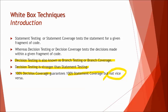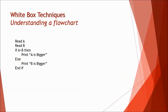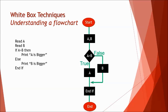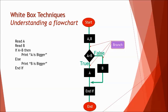We have covered the understanding of flowcharts in statement testing already — how a fragment of code given in a question should be converted to a flowchart, and from the flowchart you can derive the number of test cases and get the right answer. A flowchart basically consists of branches, which are called decisions, and nodes, which are called statements. We covered the nodes part earlier; we'll be covering branches in this tutorial.